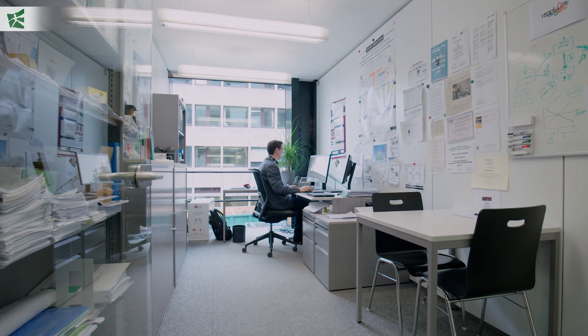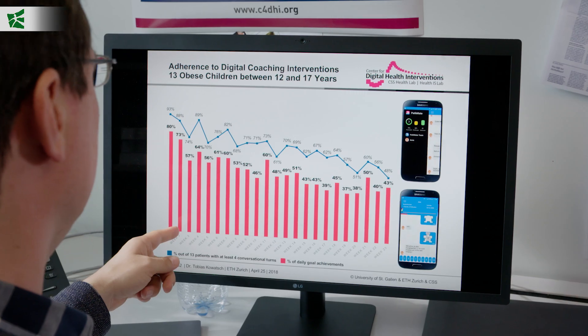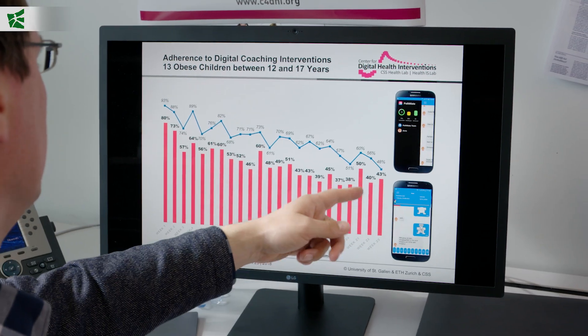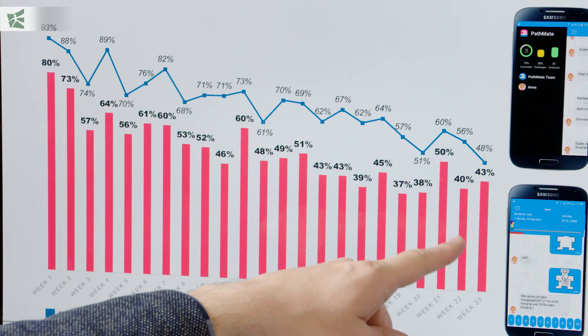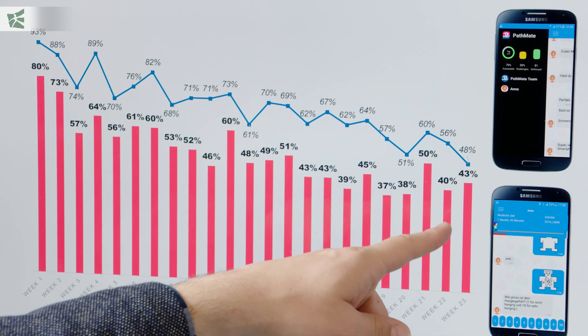The second moment was that we could see the obese children reached their daily goals to 40% after a six-month intervention. And that was really cool.